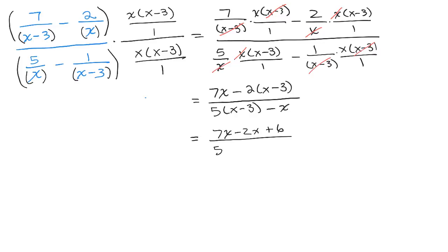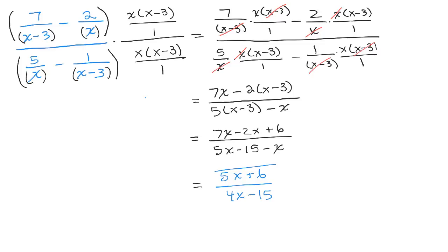And in the denominator, 5x minus 15 minus x. So in the numerator we have 5x plus 6, and in the denominator we have 4x minus 15. Neither of those factor, so that's in the most simplified form.